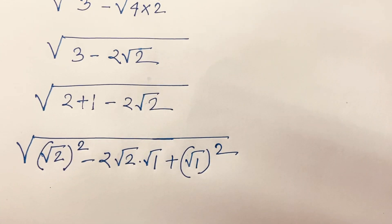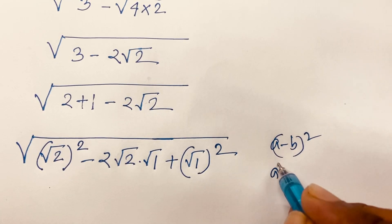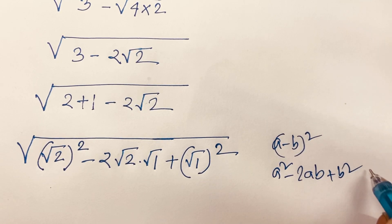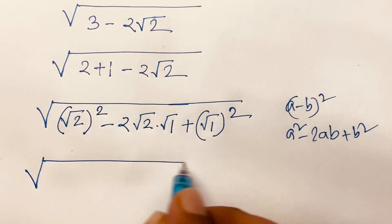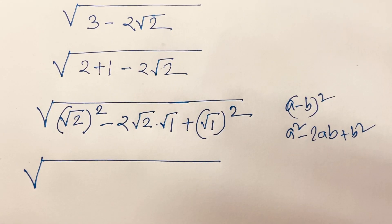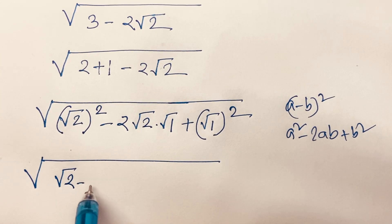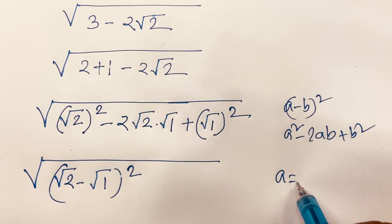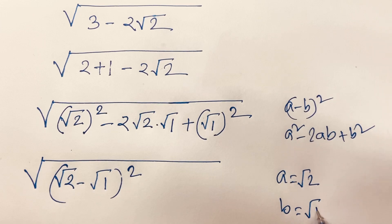Because we know that (a - b)² = a² - 2ab + b², we can apply this identity here. We can see this matches the form with a = √2 and b = √1.